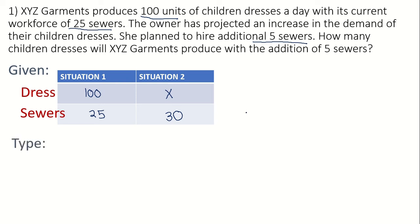Next, we will determine the type of proportion. If the number of dresses increases, will the needed sewers also increase? If we need to sew more, do we need more sewers? Yes. So the direction of both quantities is the same, which means this is a direct proportion.